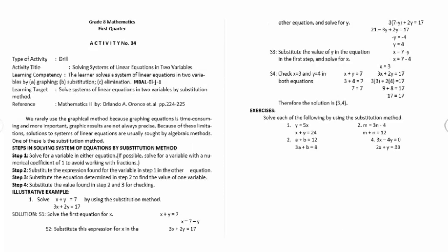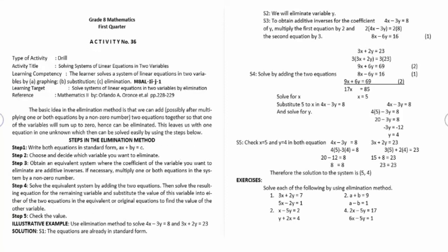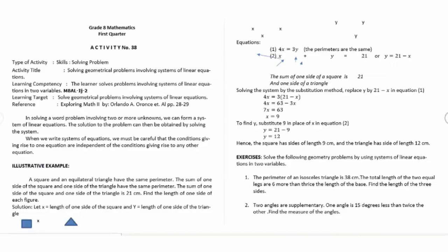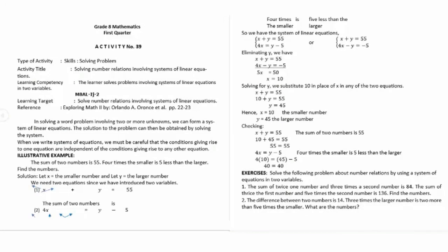Activity number thirty-three is solving systems of linear equations in two variables. Activities thirty-five, thirty-six, and thirty-seven continue solving systems of linear equations in two variables using different methods. Activity number thirty-eight is solving geometrical problems involving systems of linear equations. Activity number thirty-nine is solving number relations involving systems of linear equations.